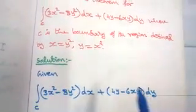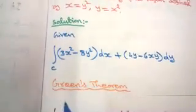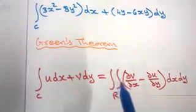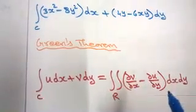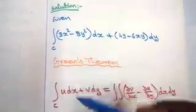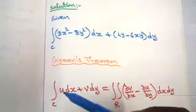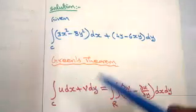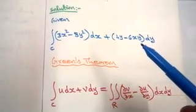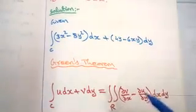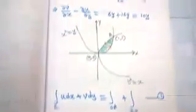Solution. Given the integral and the Green's Theorem formula — integral over C of u dx plus v dy equals the double integral over R of (∂v/∂x minus ∂u/∂y) dx dy — by comparing these two, the coefficient of dx is u. So u equals 3x² minus 8y², and v equals 4y minus 6xy. We need ∂v/∂x and ∂u/∂y.